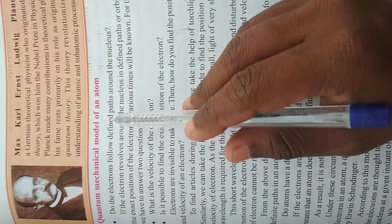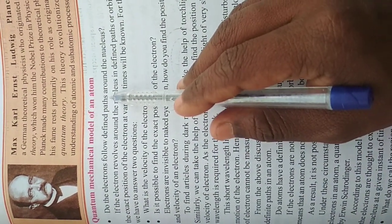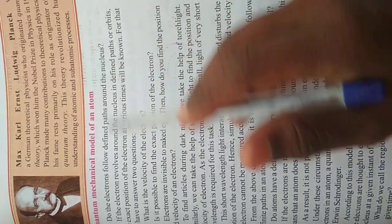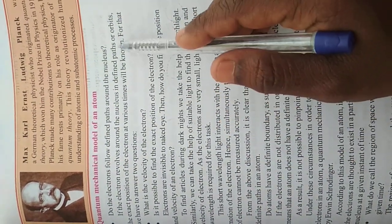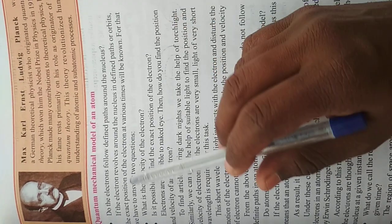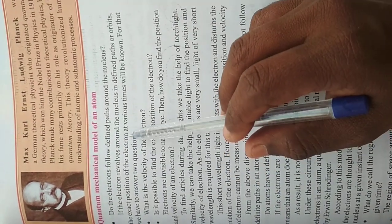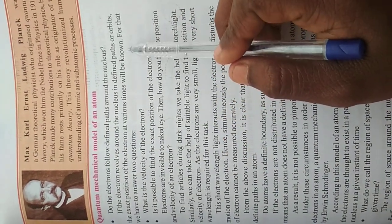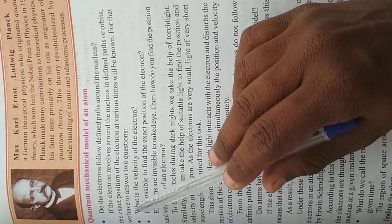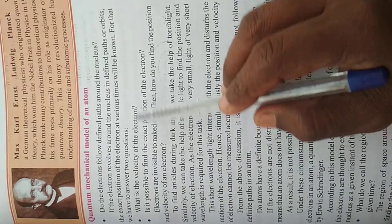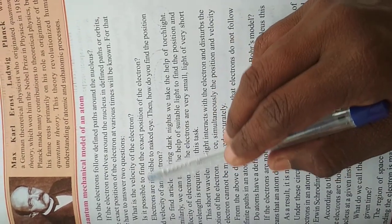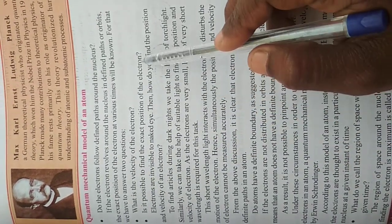Do the electrons follow defined paths around the nucleus? If the electron revolves around the nucleus in defined paths or orbits, the exact position of the electron at various times will be known. For that, we have to answer two questions: What is the velocity of the electron? Is it possible to find the exact position of the electron?